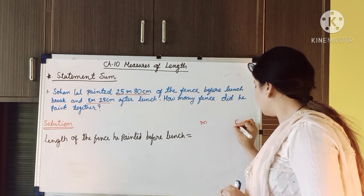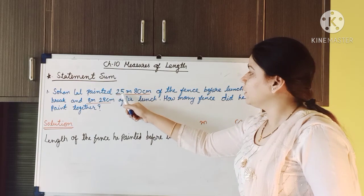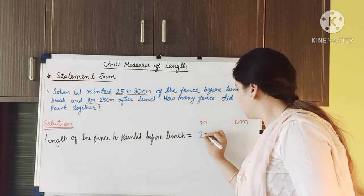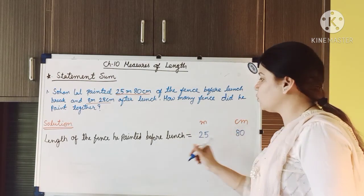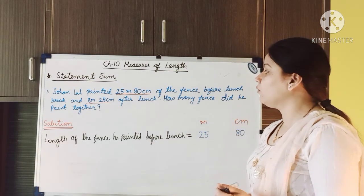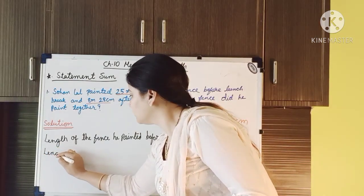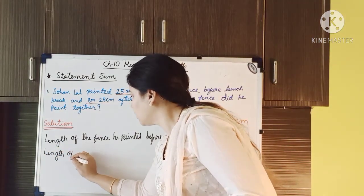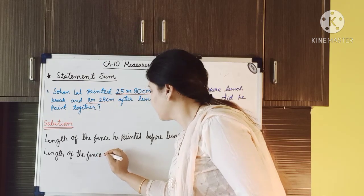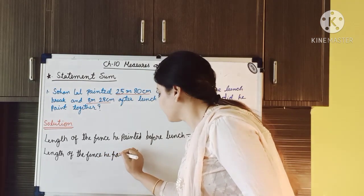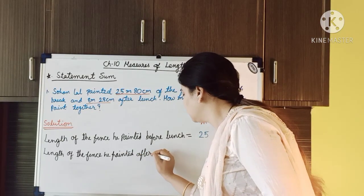First we will write here meter and here centimeter. In the meter column we will write 25 meter, and in the centimeter column we will write 80 centimeter. So this is the first statement.